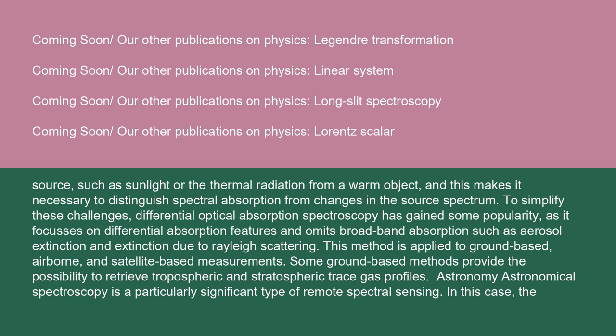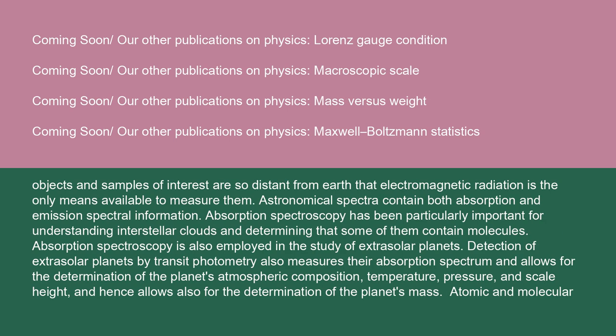Astronomical spectroscopy is a particularly significant type of remote spectral sensing. In this case, the objects and samples of interest are so distant from Earth that electromagnetic radiation is the only means available to measure them. Astronomical spectra contain both absorption and emission spectral information. Absorption spectroscopy has been particularly important for understanding interstellar clouds and determining that some of them contain molecules. Absorption spectroscopy is also employed in the study of extrasolar planets. Detection of extrasolar planets by transit photometry also measures their absorption spectrum and allows for the determination of the planet's atmospheric composition, temperature, pressure, and scale height, and hence also the determination of the planet's mass.